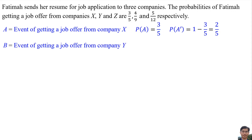Let B be the event of getting a job offer from company Y. So the probability of event B is 4 over 9. The probability of the event of not getting a job offer from company Y is 1 minus 4 over 9, which is equal to 5 over 9.